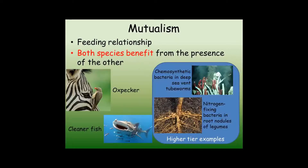In contrast, mutualism is a feeding relationship where both species rely on each other and both species gain from the presence of the other. For example, oxpeckers feed on the parasites living on large mammals like zebra. The oxpecker gains a food supply and the zebra has its parasites removed. Cleaner fish feeding inside the mouths of sharks is another mutualistic relationship.